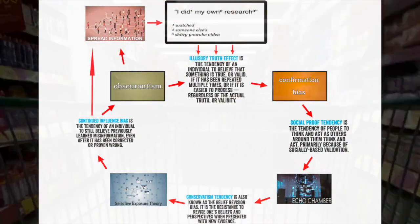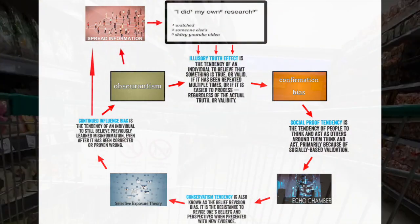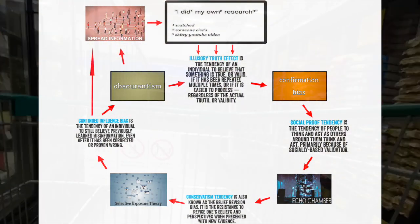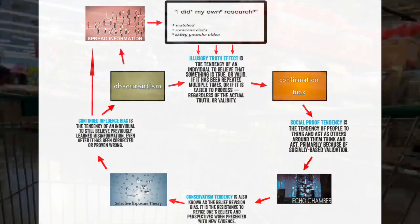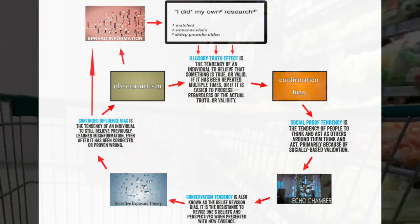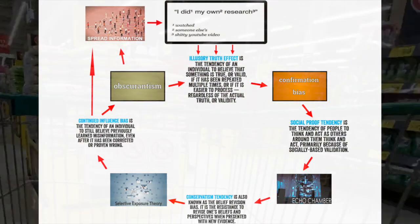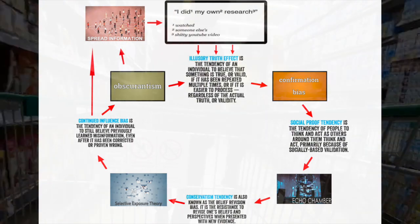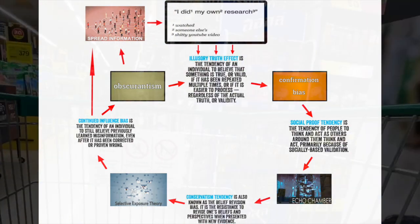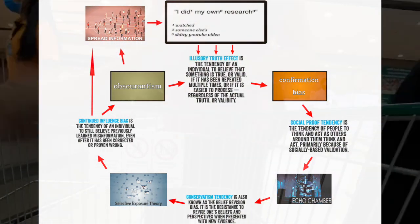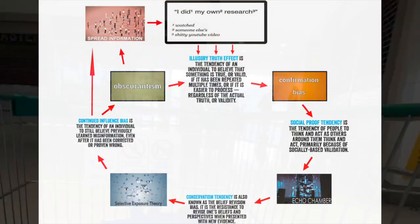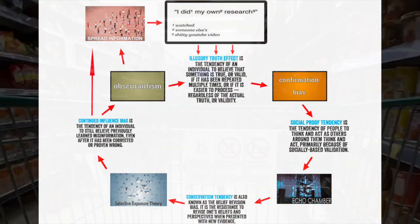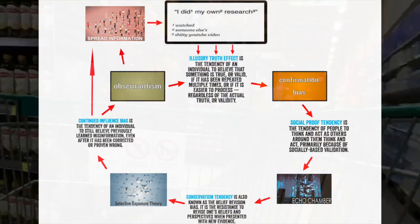The Dunning-Kruger effect is part of the illusionary truth effect regime. It's a tendency of an individual to believe something whether it's true or valid if it has been repeated multiple times or if it's just easier to process, regardless of whether it's true. Then these people will move on to creating a confirmation bias around themselves from which they can spread their information and build up a bigger group of people.